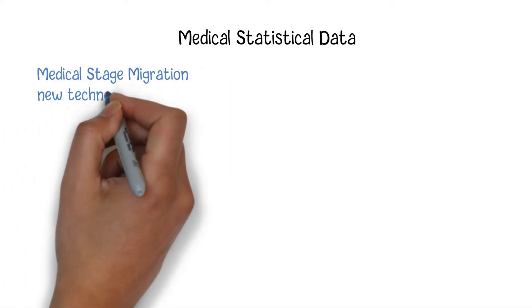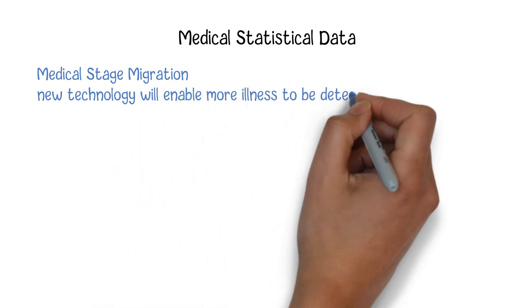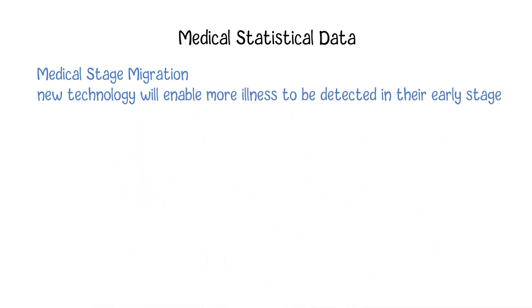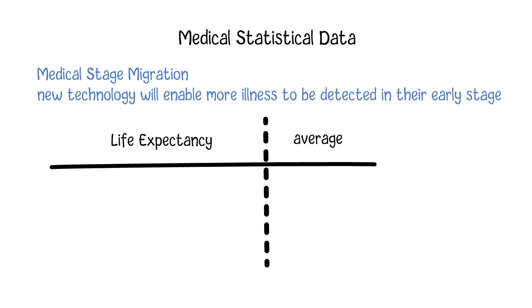There is a term called medical stage migration, which indicates that ever-changing illness detection technology will enable more illnesses to be detected in their early stage. This causes the movement of those people from the healthy to the patient group. From a statistical point of view, consider the following example with two groups of people included in the medical statistics.